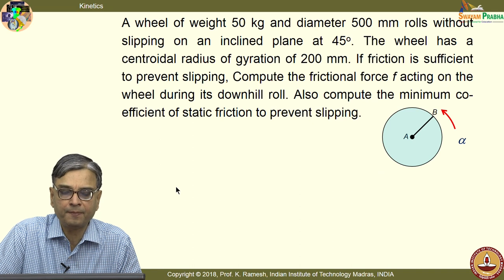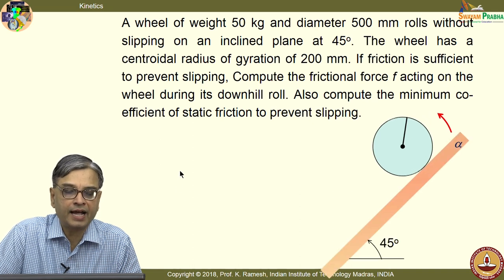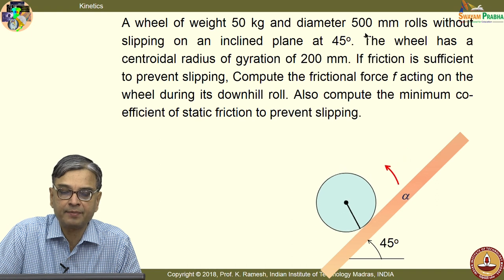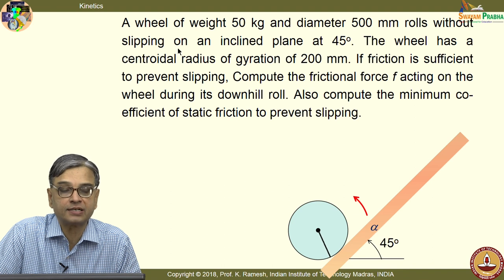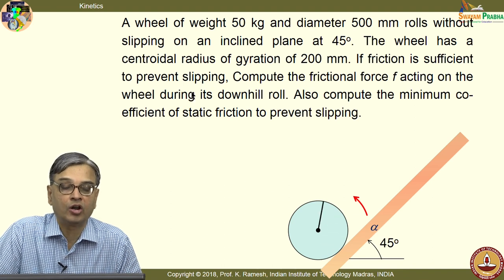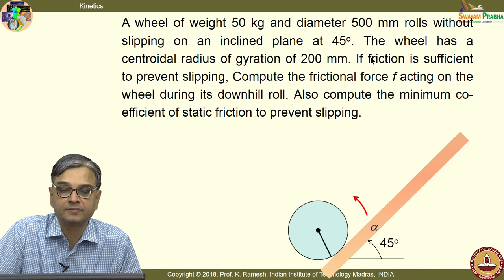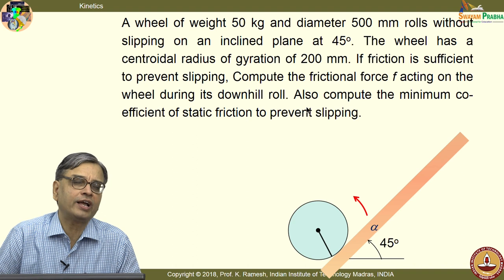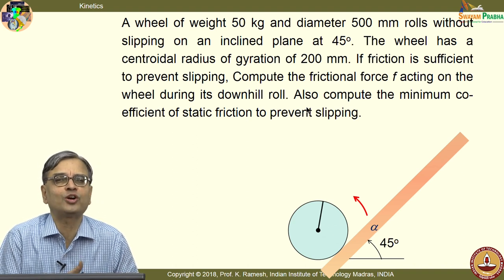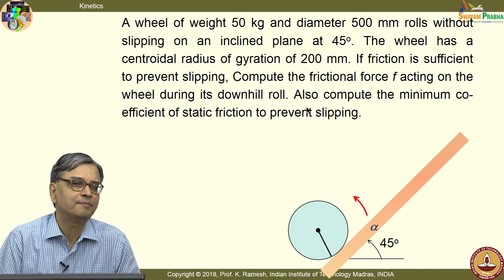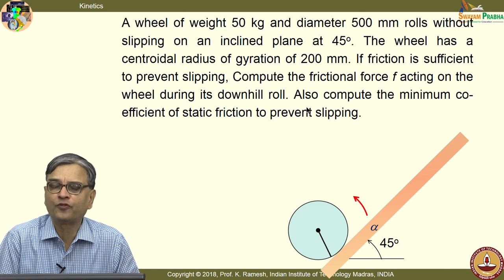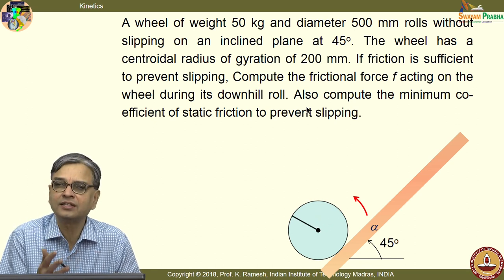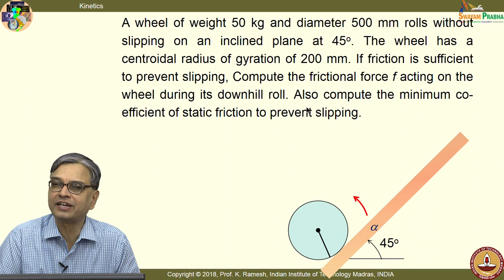We move on to another simple problem. A wheel of weight 50 kilograms and diameter 500 millimetres rolls without slipping on an inclined plane at 45 degrees. The wheel has a centroidal radius of gyration of 200 millimetres. The problem is coined so that you do not spend time calculating the mass moment of inertia — the radius of gyration is given directly. The focus is on learning dynamics, not on calculating mass moment of inertia.